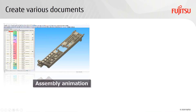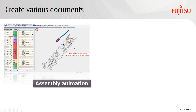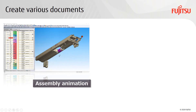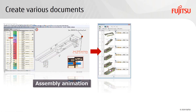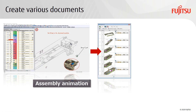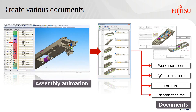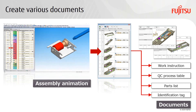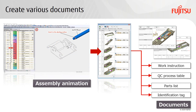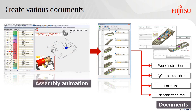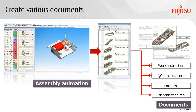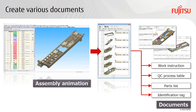From the created assembly animation, still images are extracted and output together with operation information to create various manufacturing documents at once. Even if there is a change in the product shape or assembly procedure, the changed part can be immediately reflected in the document, so the time for document creation and correction can be greatly reduced.